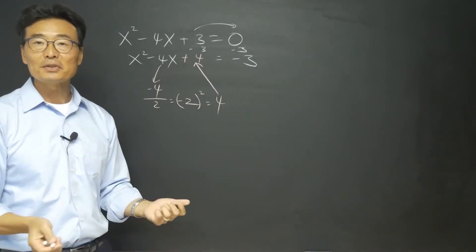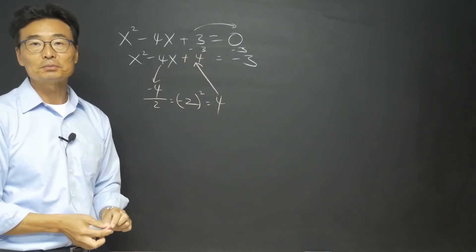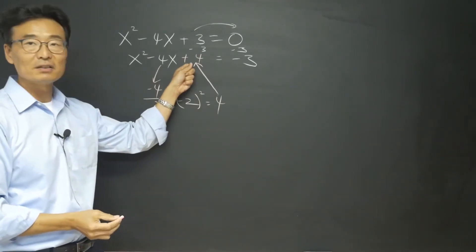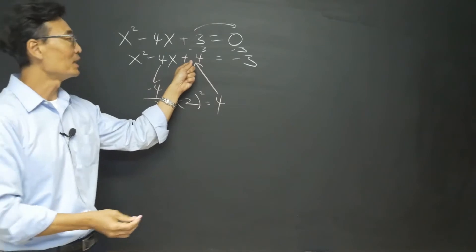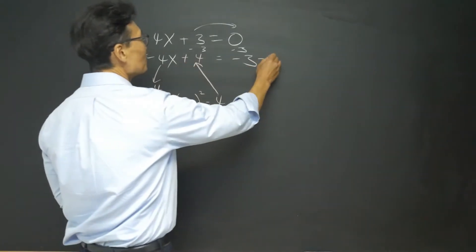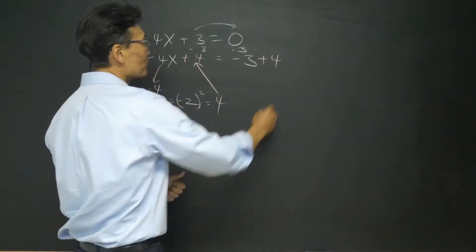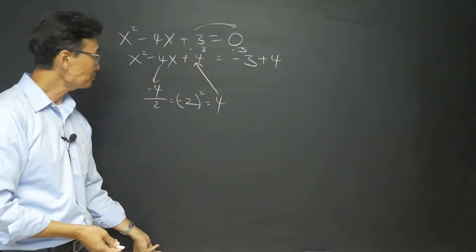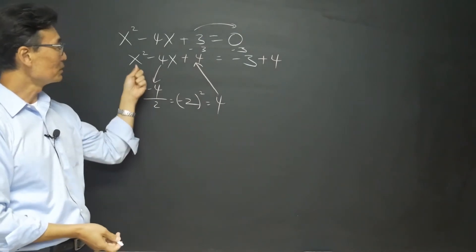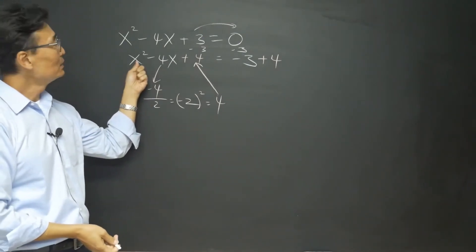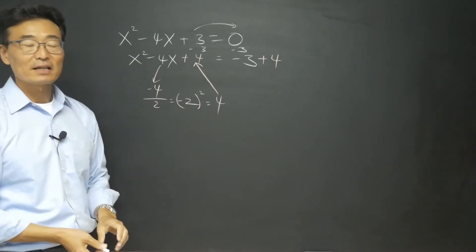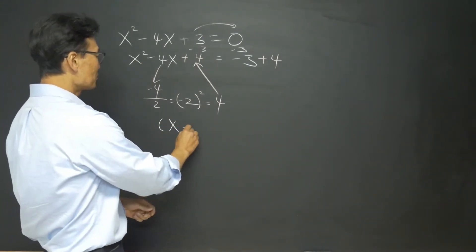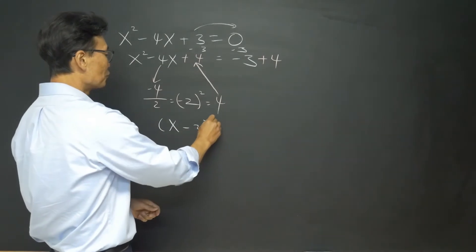But what's the rule from pre-algebra? If you add a 4 on the left side of the equal sign, you must add a 4 on the right side of the equal sign as well. So the left side, we can go ahead and factor this — it's going to be x minus 2, squared.